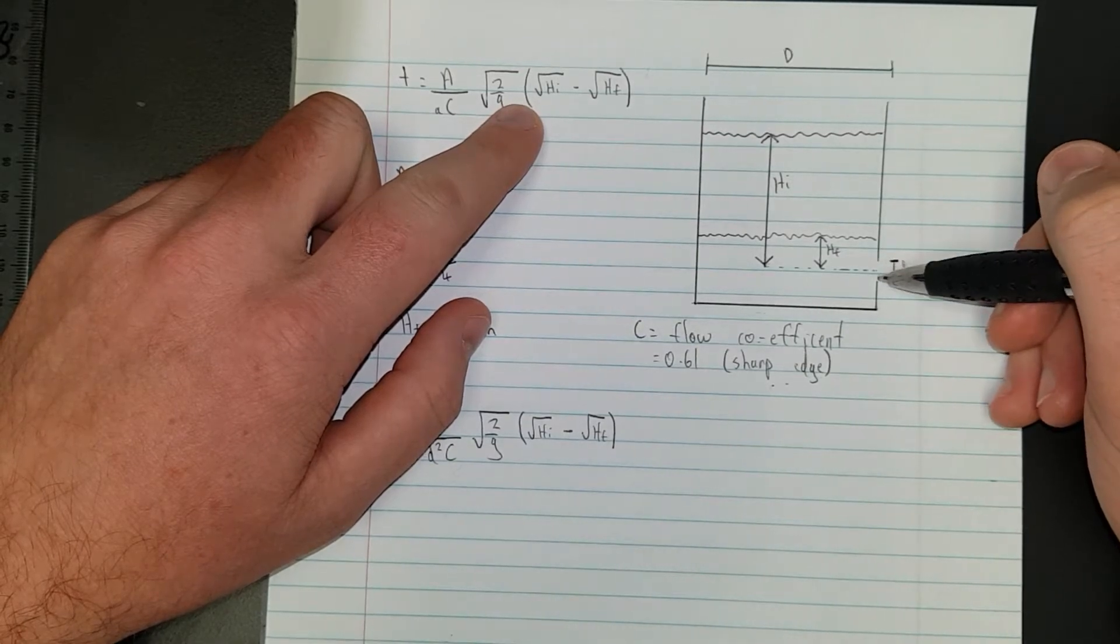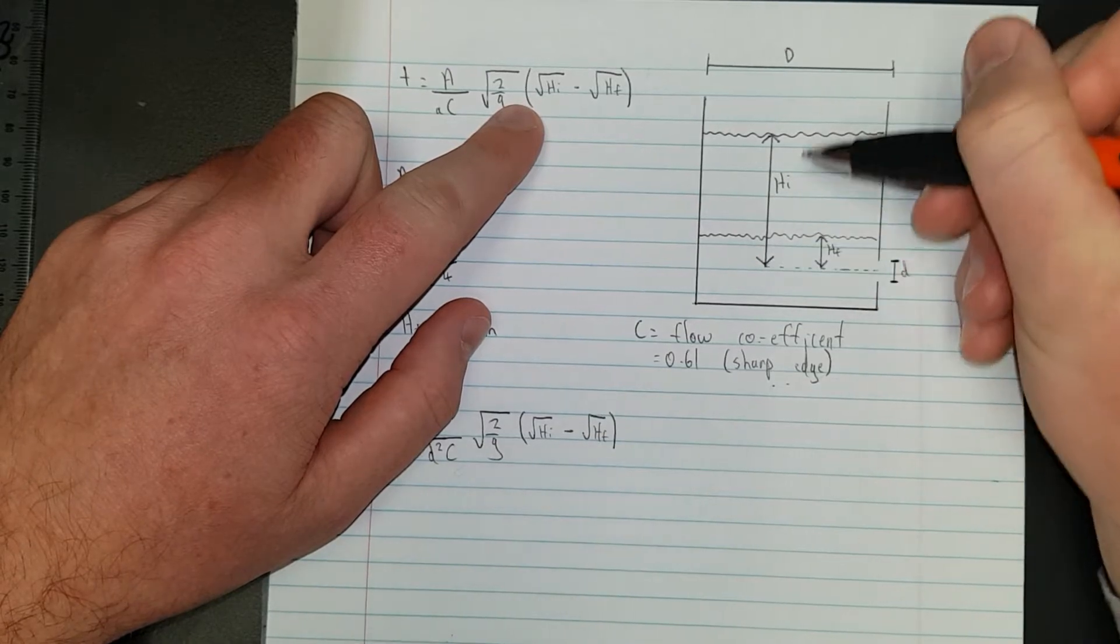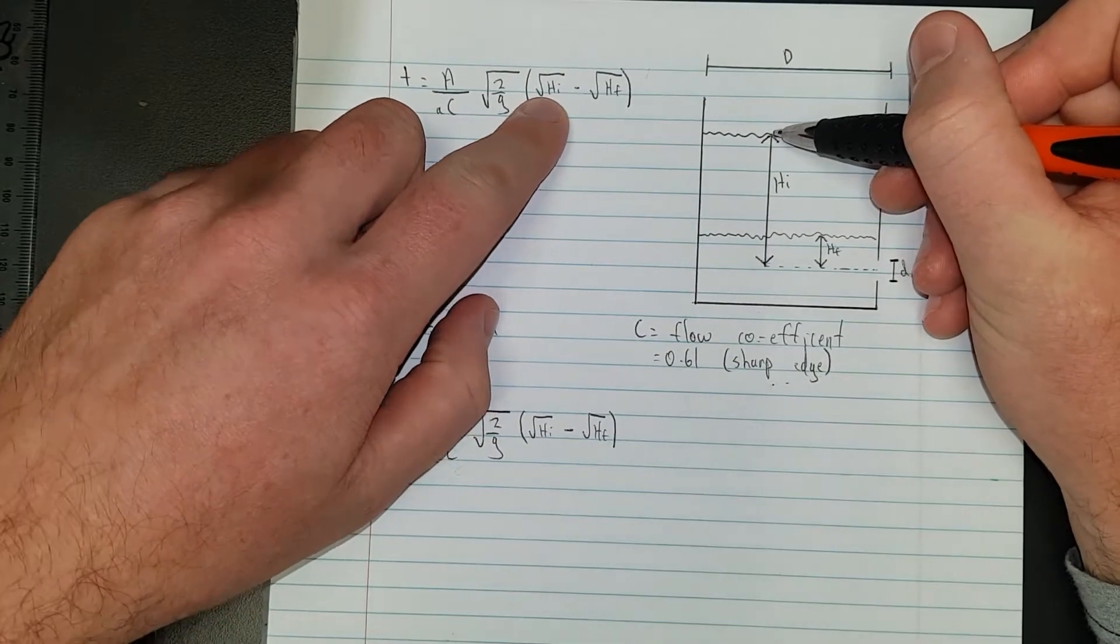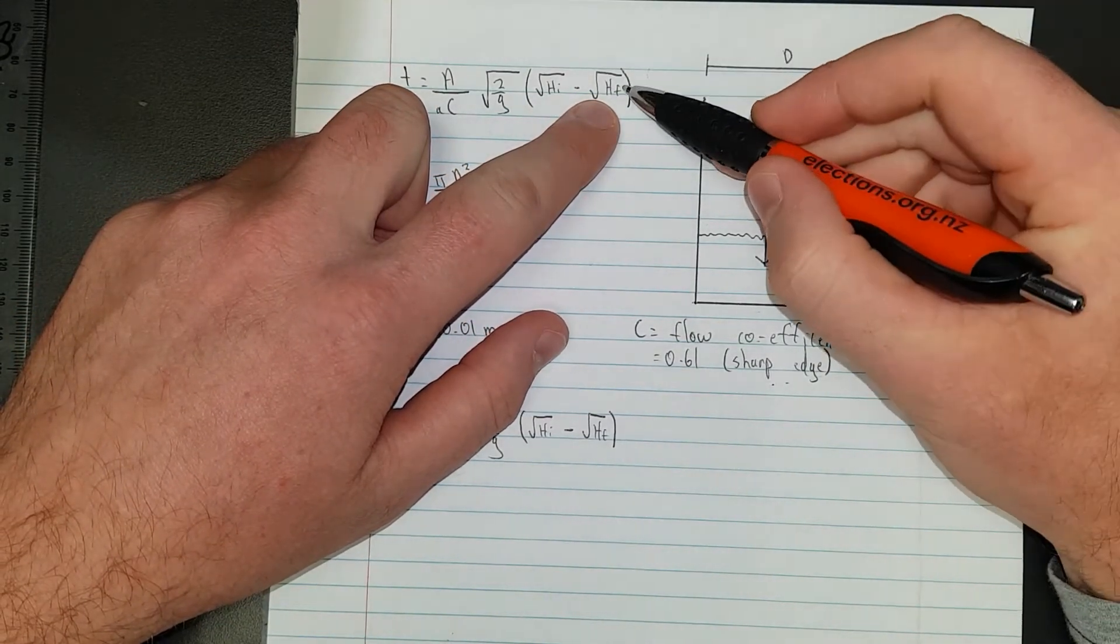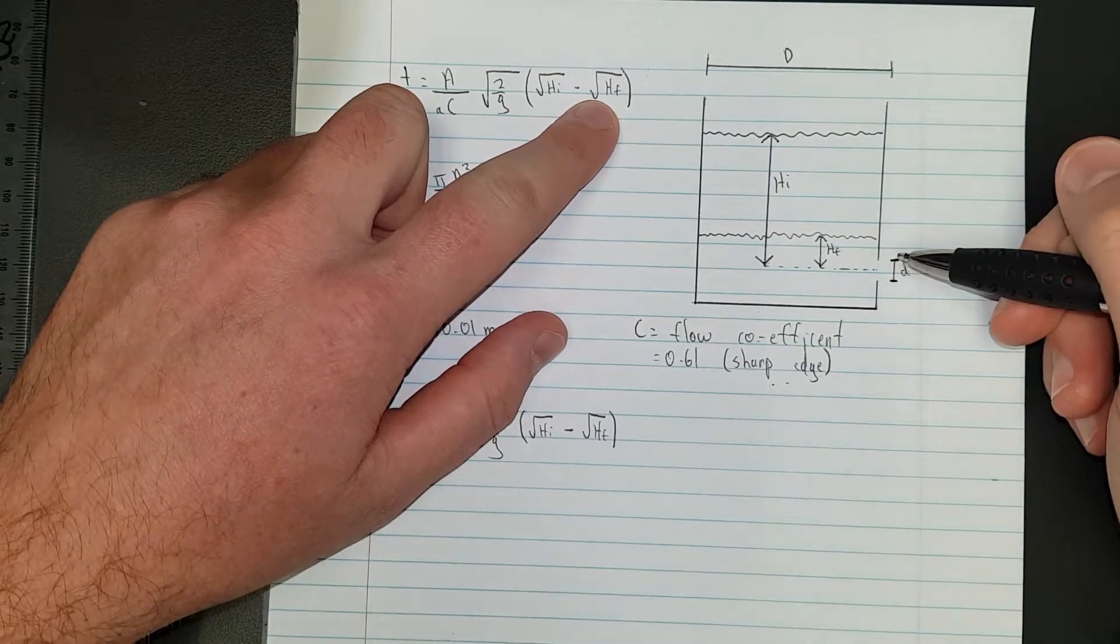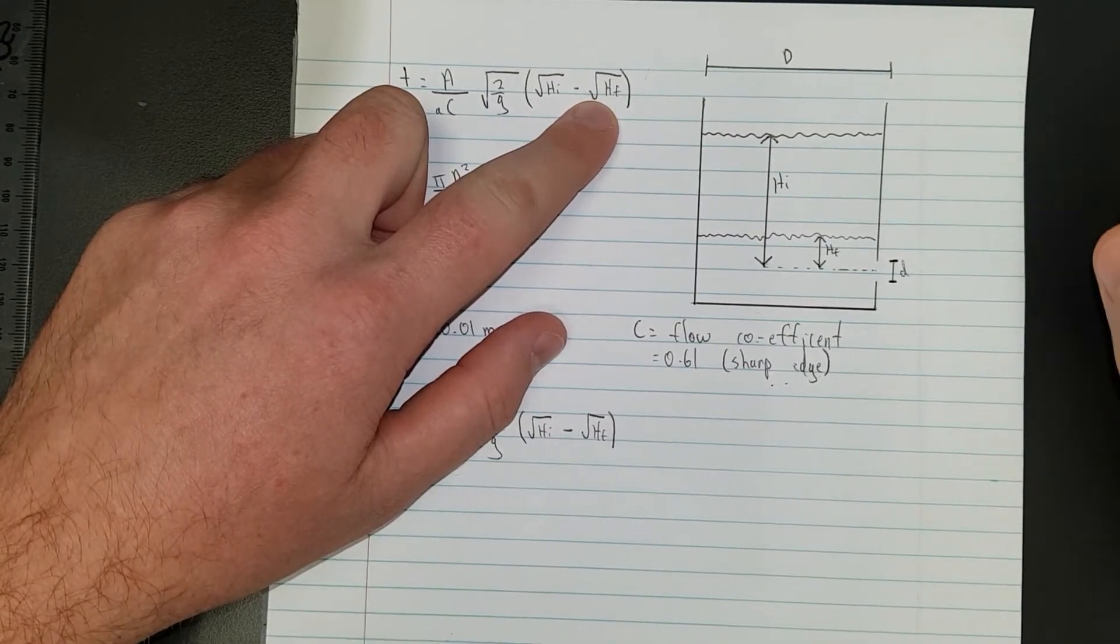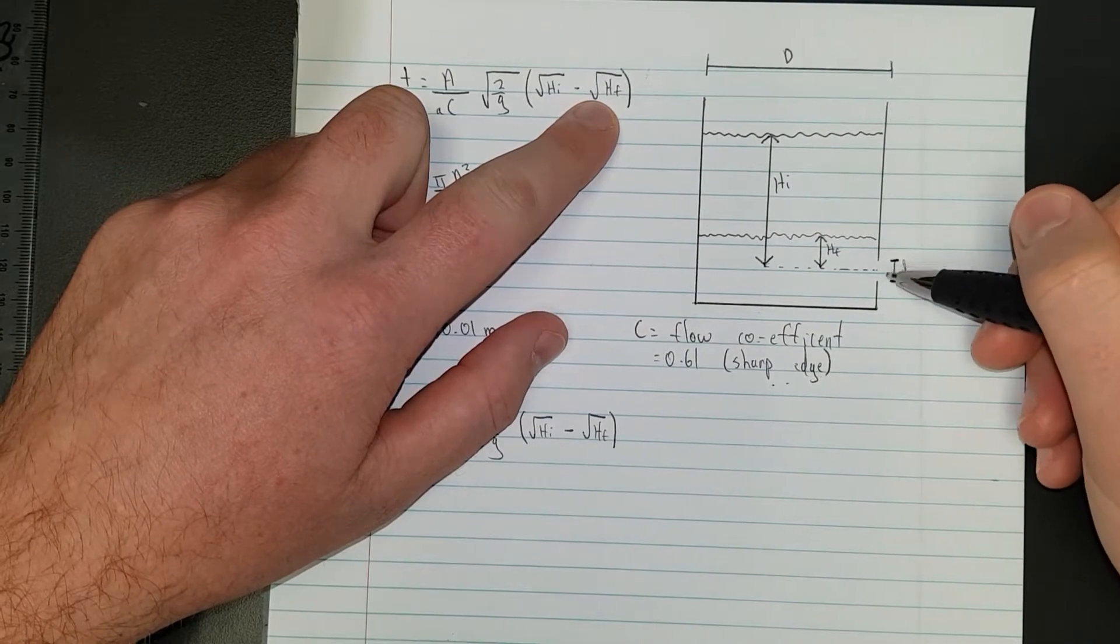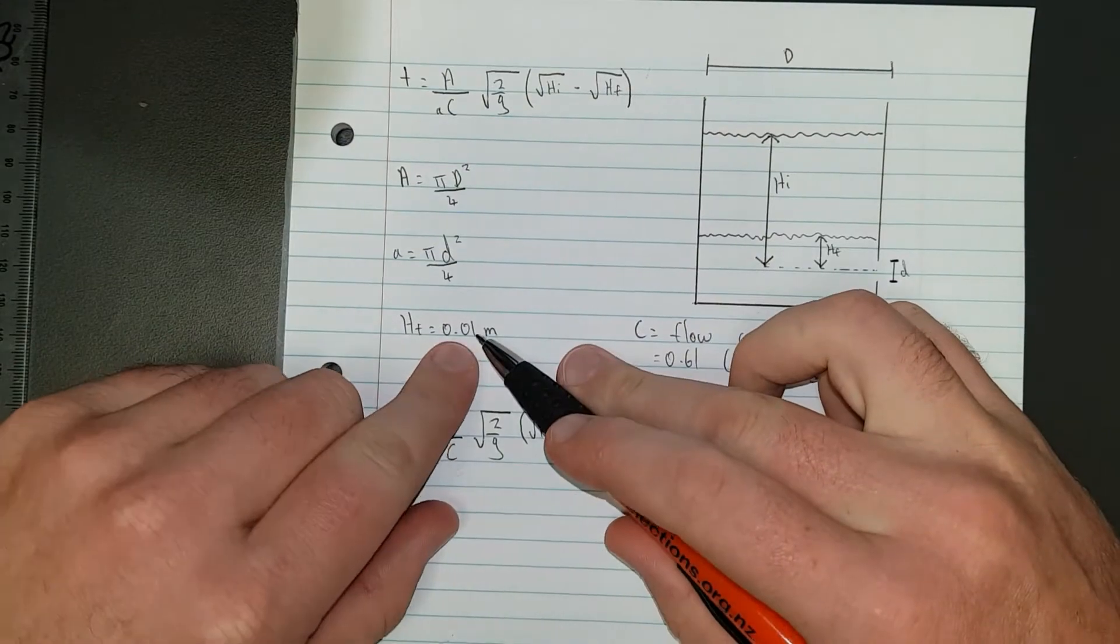Here's the hole in my water bottle. You go to the center of the hole, across from there up to the starting height of the water - that's the initial height, H_i minus H_f. I originally set H_f to zero but it didn't work because the viscosity of water and surface tension stopped the water from flowing once it got down to about half a centimeter. So I set my H_f to 1 centimeter.